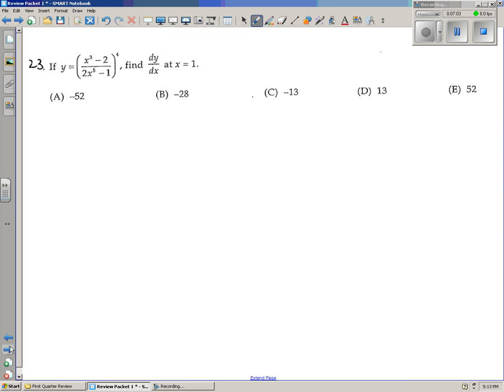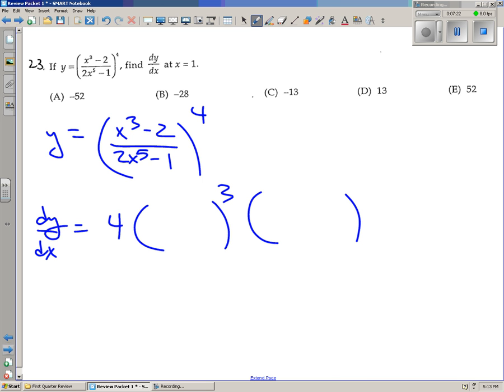Alright, number 23. If y is this monstrosity to the fourth, we want to find dy dx at x equals 1. So we have y is equal to stuff to the fourth. So if you get dy over dx, it's 4 times stuff to the third times derivative of stuff.